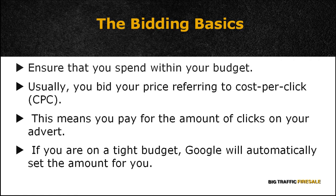Let's say most of us here have started out with our AdWords campaigns. First and foremost, you want to ensure that you spend within your budget. For starters, it's common to bid your price referring to cost-per-click, CPC. CPC simply means that you pay for the amount of clicks on your advert. Google allows you to pay the maximum bid amount of your chosen keyword, or if you have a tight budget to keep, you can always choose the automatic option. Google will automatically select the bid amount for you within your budget, which is known as maximum cost-per-click bid.